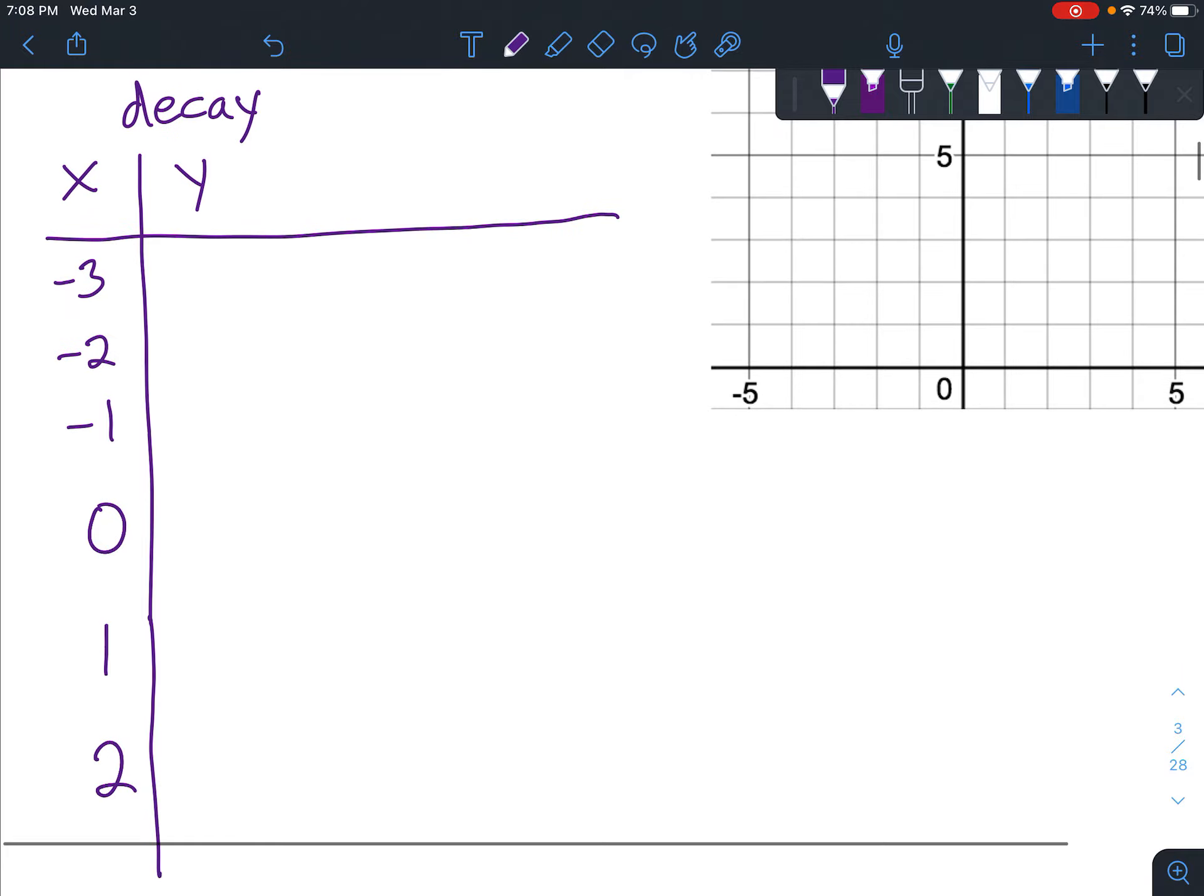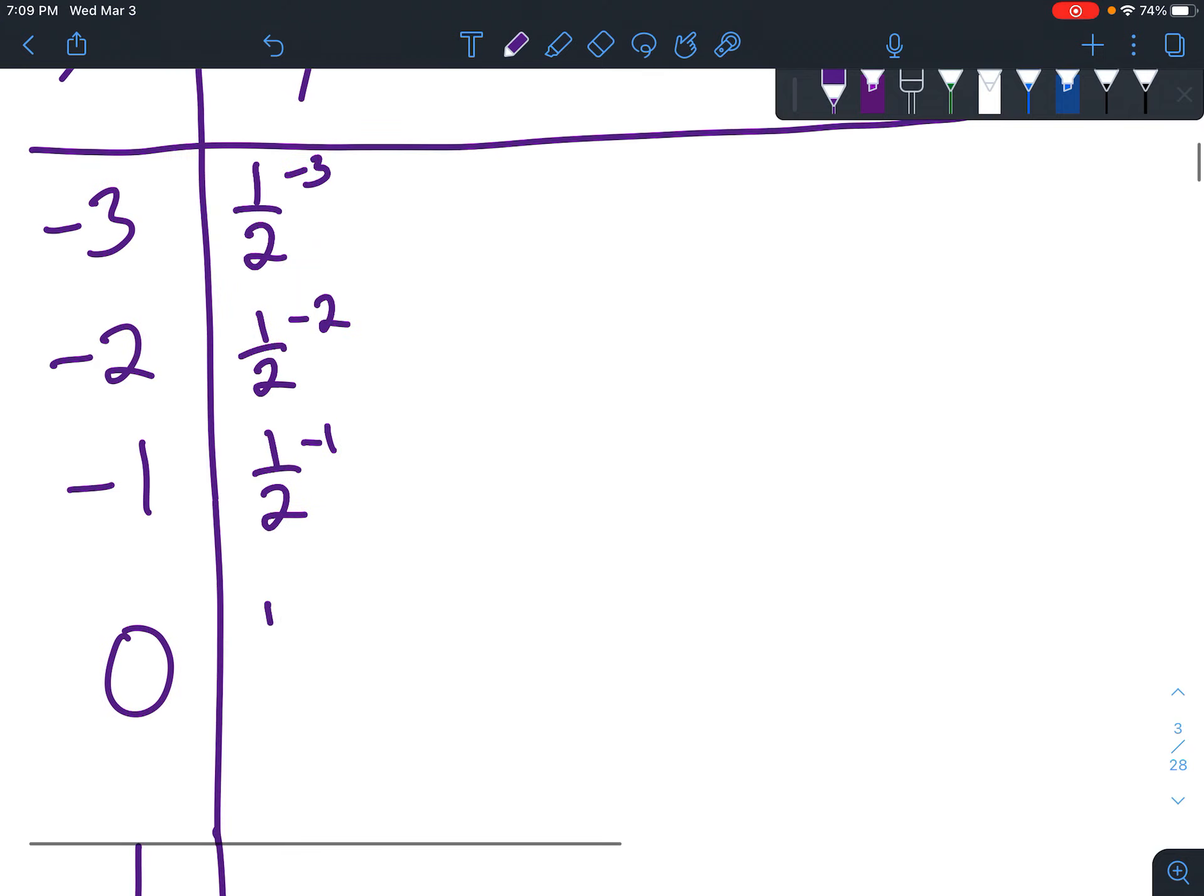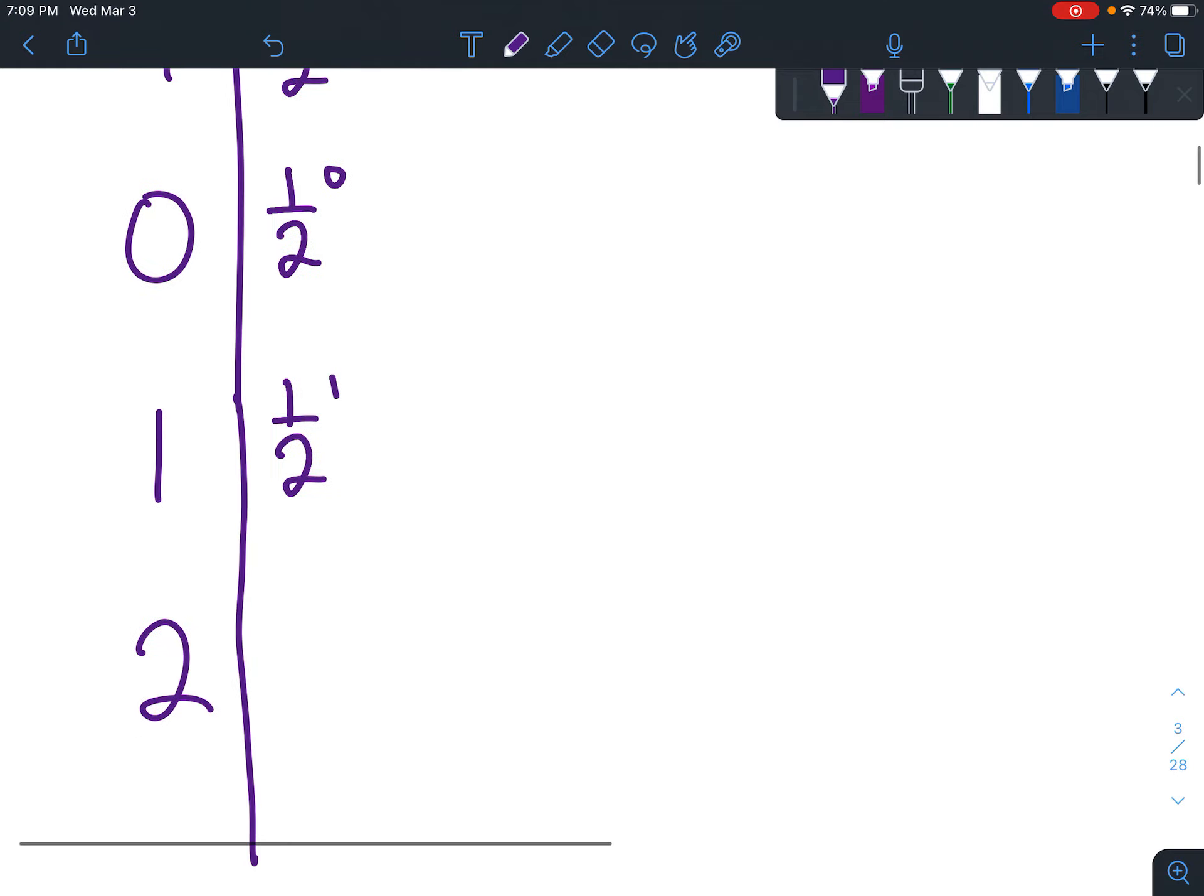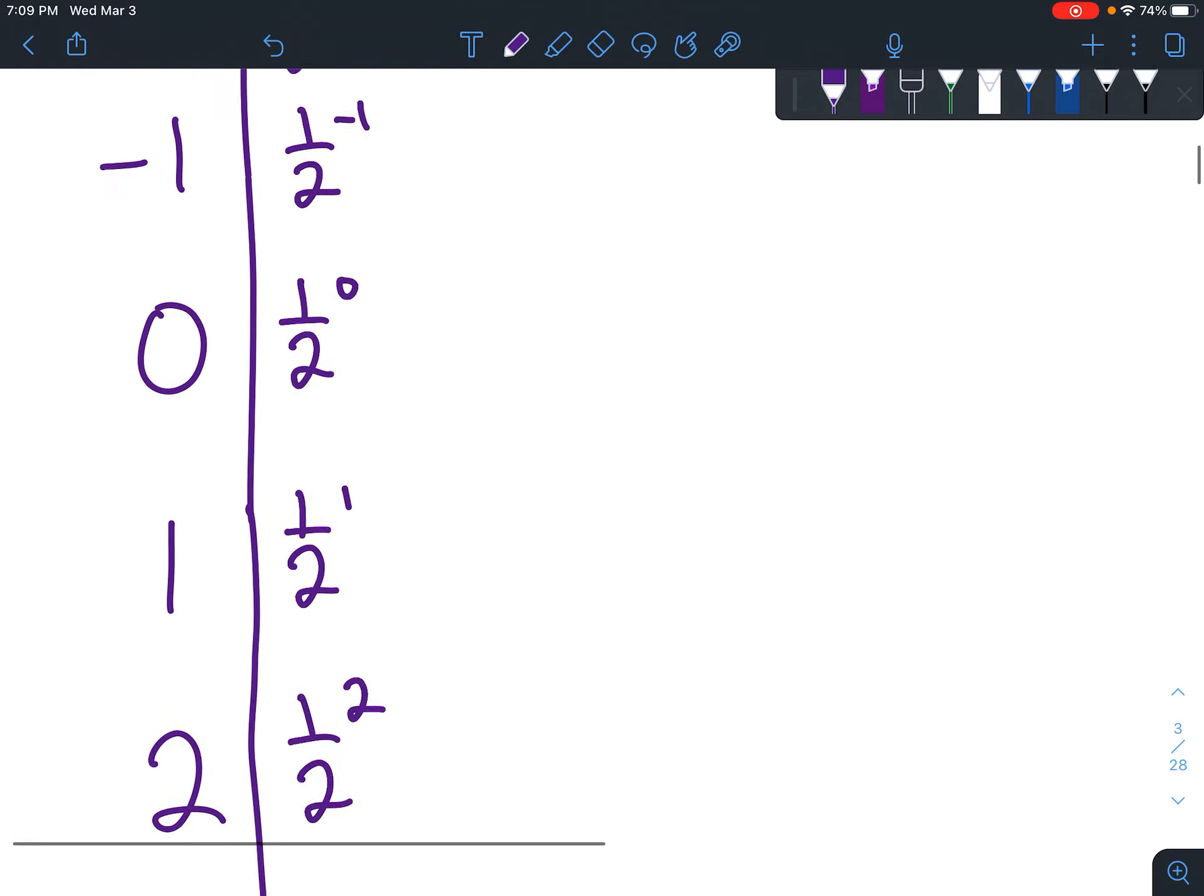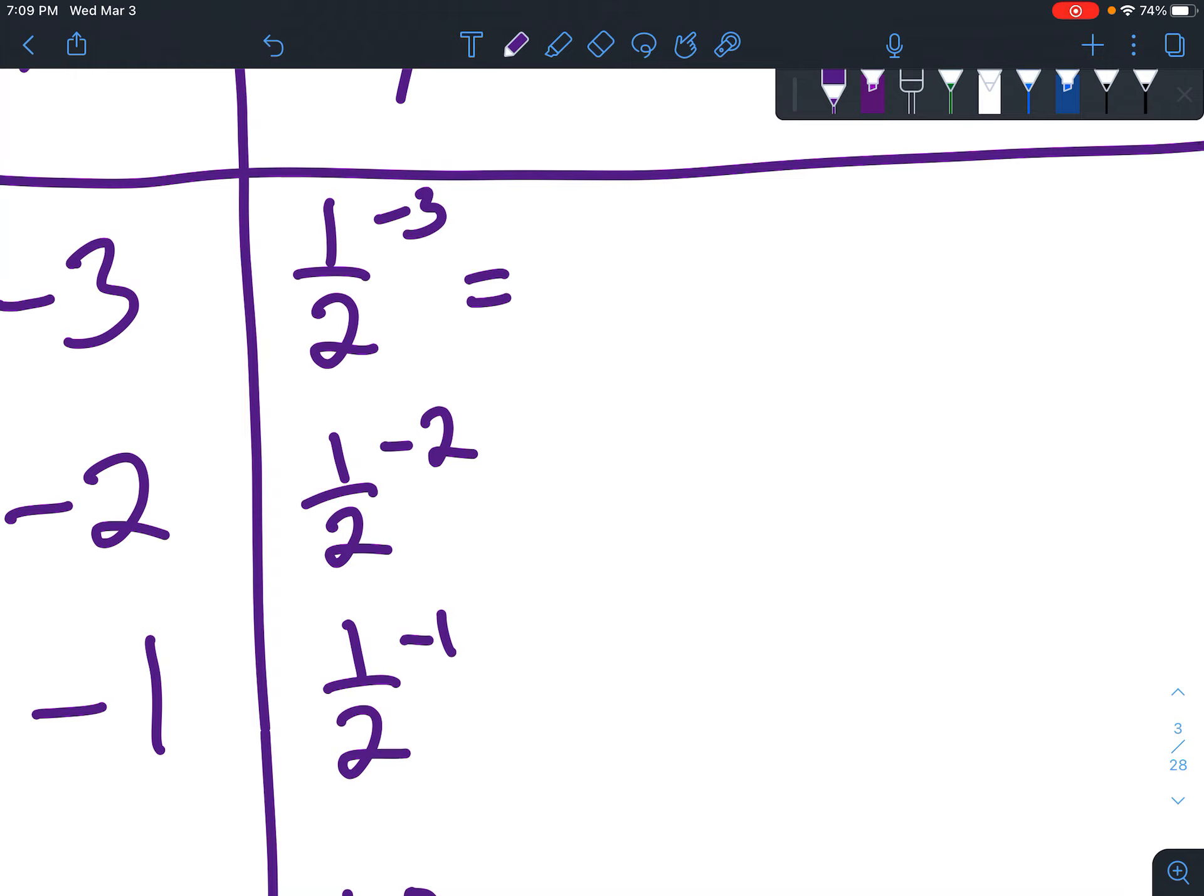And this time it's 1 half to the x. So the first one is going to be 1 half to the negative 3. Next is going to be 1 half to the negative 2. 1 half to the negative 1, 1 half to the 0, 1 half to the first, 1 half to the second. So it's kind of nice to do this assembly line style really quick. Okay, so 1 half to the negative 3. So just remember, when you have a negative exponent, it's going to flip-flop the numerator and the denominator. And once you do that, it's like it's positive. So we've got 2 over 1 to the third, which really just ends up being 8.